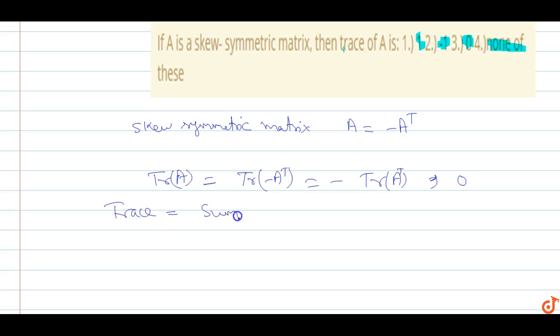...sum of diagonal elements of the matrix. How to take it? The trace is the sum of diagonal elements. In a skew-symmetric matrix, the diagonal elements are zero.